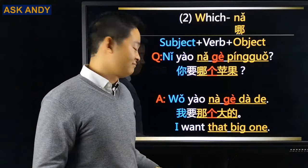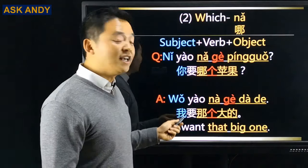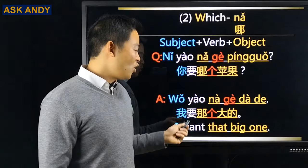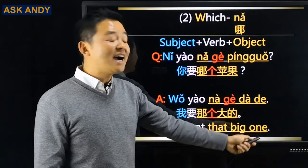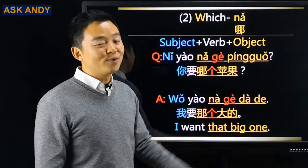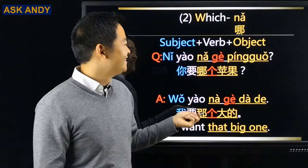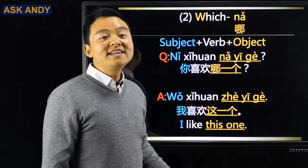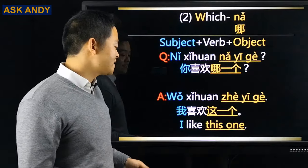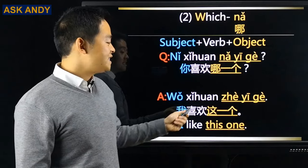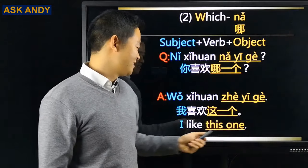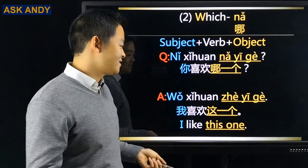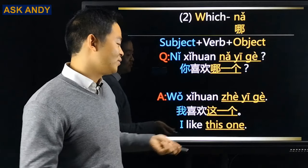你要哪个苹果? → 我要那个大的 (I want that big one). 你喜欢哪一个? → 我喜欢这一个 (I like this one). Quote and replace the question word with new information.